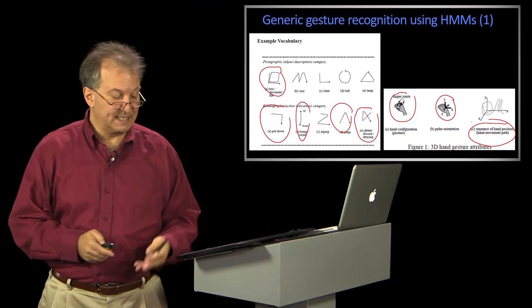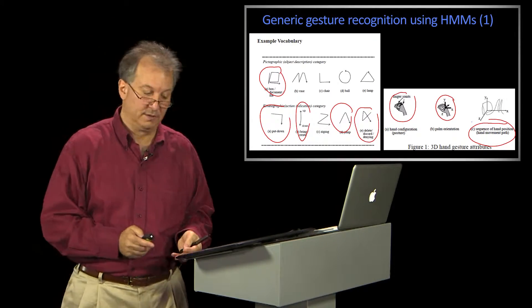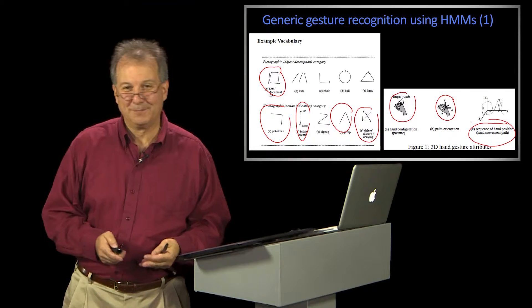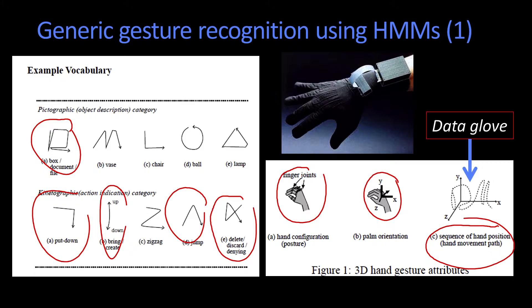So the first thing you should ask is how are they getting this information? Well, they were using something called a data glove. Here's a picture. So a data glove is this thing that you could wear on your hand that had both accelerometer and gyro information about how it was being globally manipulated, and also knew something about how you were moving your fingers.